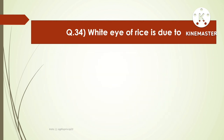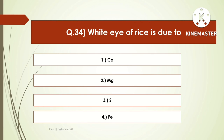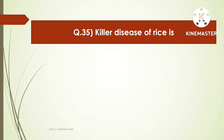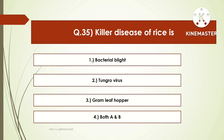The next question is: white eye of rice is due to — options are calcium deficiency, magnesium deficiency, sulfur deficiency, or iron deficiency. The right answer is iron deficiency. White eye of rice is caused due to deficiency of iron. The next question is: the killer disease of rice is — options are bacterial blight, tungro virus, green leafhopper, or both A and B. The right answer is both A and B. The killer disease of rice is bacterial blight and tungro disease.